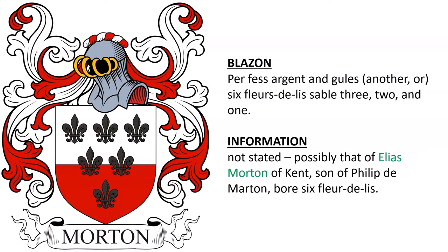The arms: Per Fess, Argent and Gules, six Fleur de Lis, Sable, 3, 2, and 1. I wasn't able to find who it belonged to, but I have a note that it was possibly that of Elias Morton of Kent, son of Philip D. Martin, who bore six Fleur de Lis.